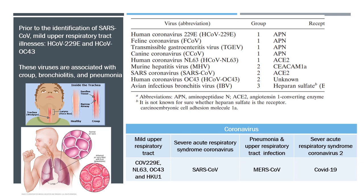Prior to the identification of SARS-CoV, coronavirus disease in humans was reported to result in mild upper respiratory tract illnesses caused by the two known pathogenic human coronaviruses, 229E and OC43, although recent studies have revealed more serious lower respiratory tract illness, including lethal disease in the elderly. Subsequent to the SARS epidemic, other coronaviruses capable of causing disease in humans — HCoV-NL63 and HCoV-HKU1 — were identified from archived nasopharyngeal aspirates.